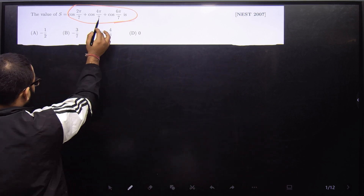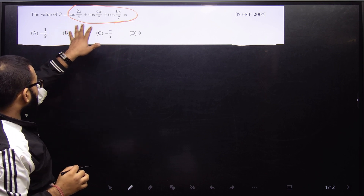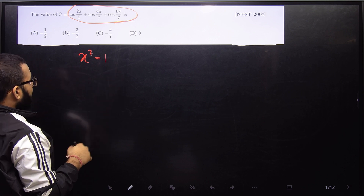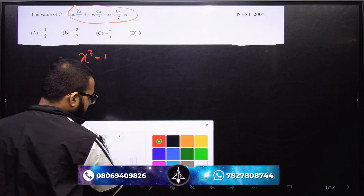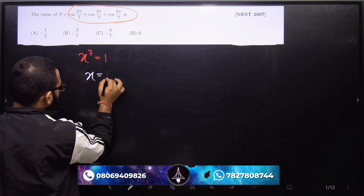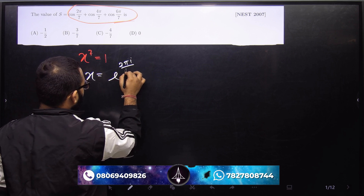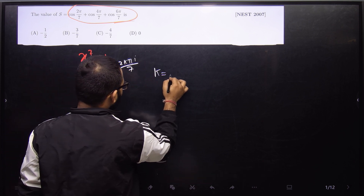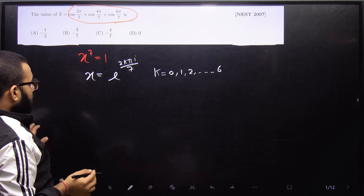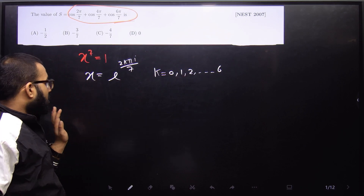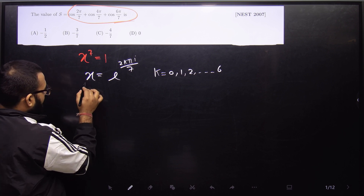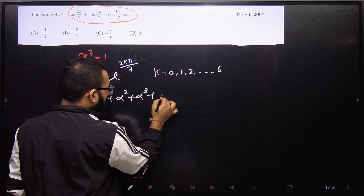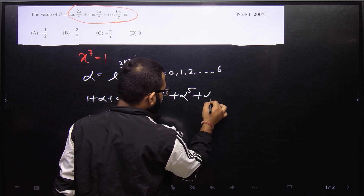We see cos 2π/7, cos 4π/7, and cos 6π/7 — in the denominator 7 occurs. So we think in that way: x to the power 7 equals 1, like a seventh root of unity. The roots of x^7 = 1 are e^(2kπi/7) for k = 0, 1, 2 up to 6. This equation has 7 roots, and the sum of all roots is 0.